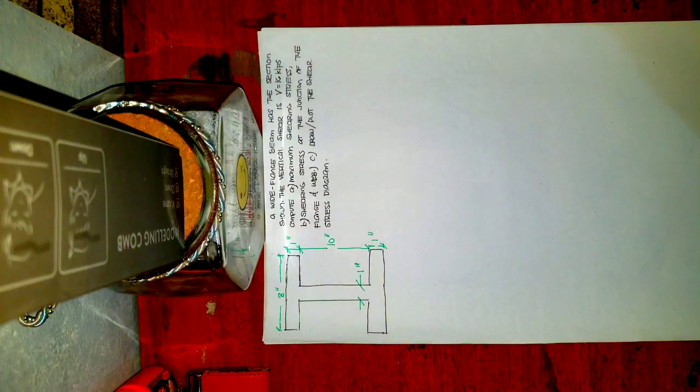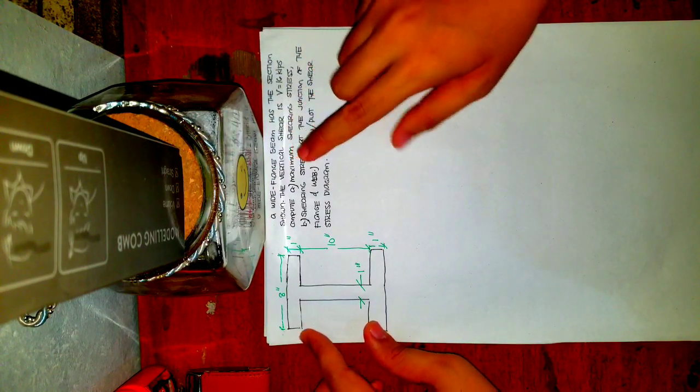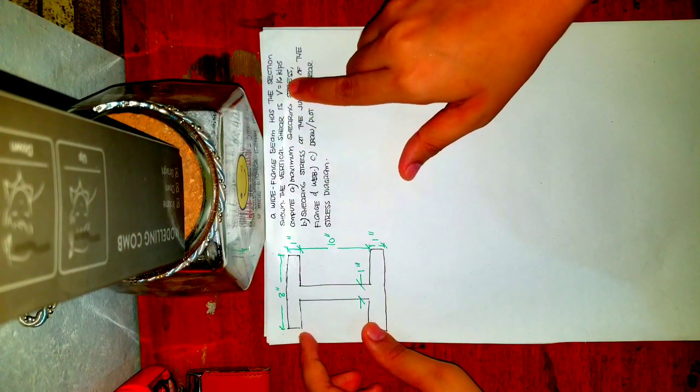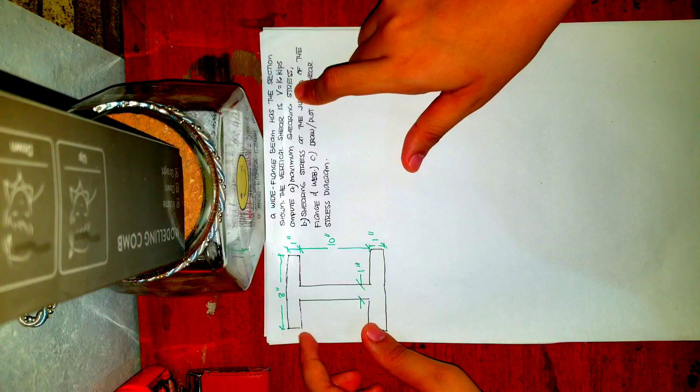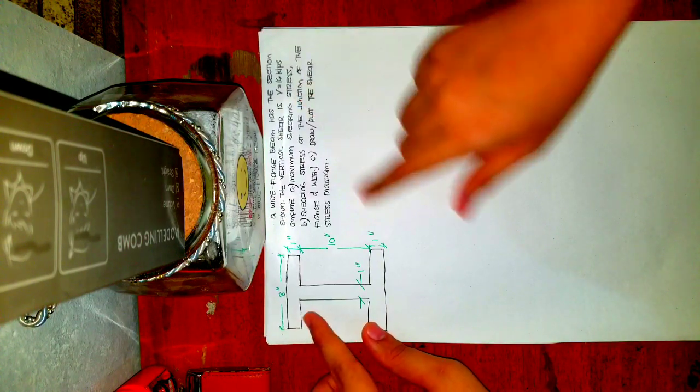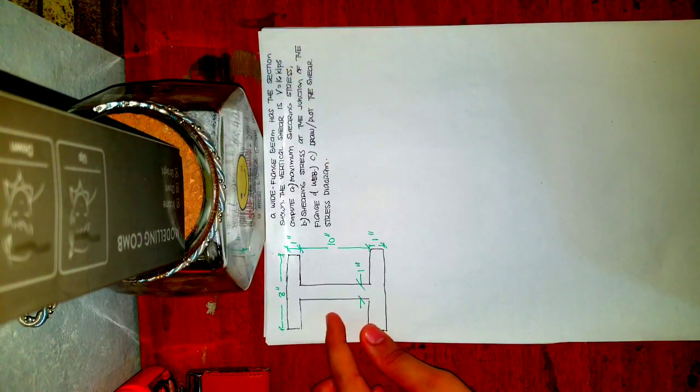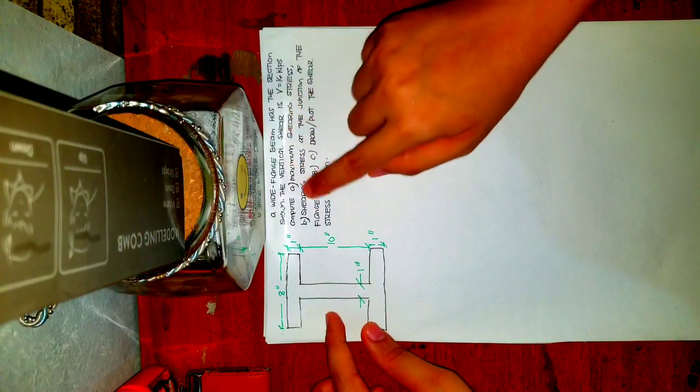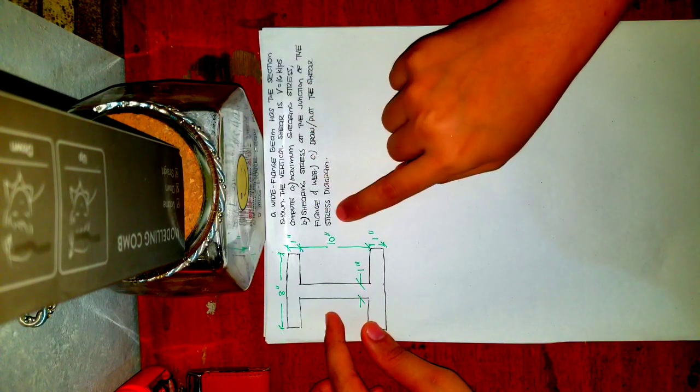Okay, so let's proceed with the next problem for horizontal shearing stress. We have here a wide flange beam with the section shown in the figure and given the vertical shear, that is equivalent to 16 kips. So no need for us to solve for the shear diagram.